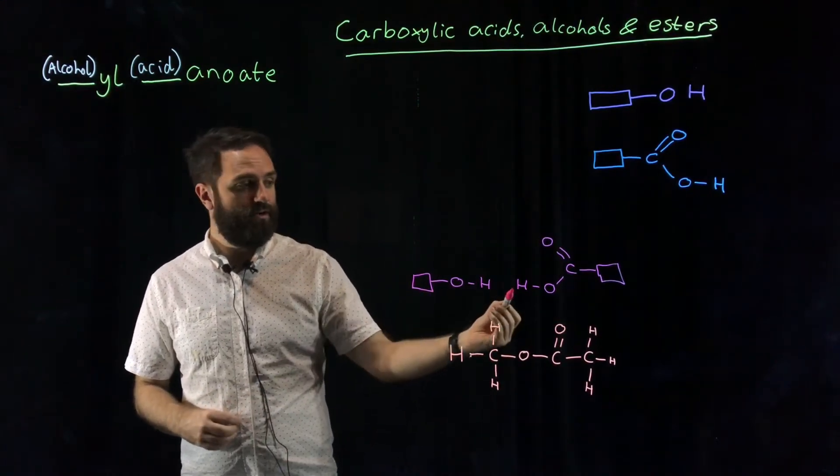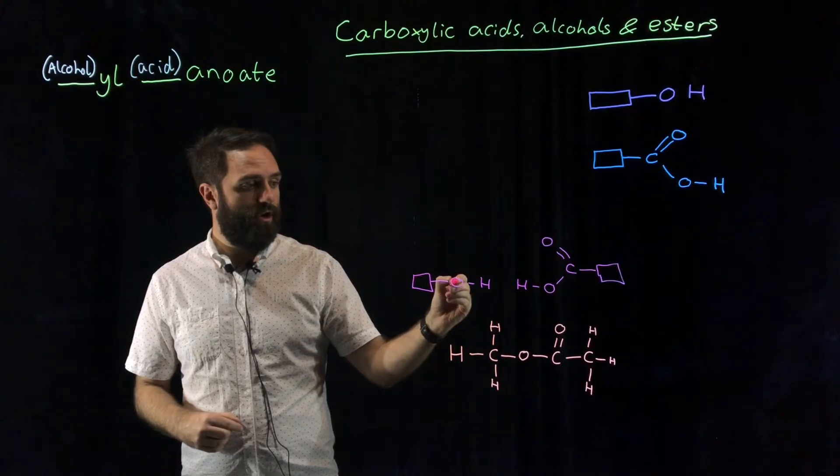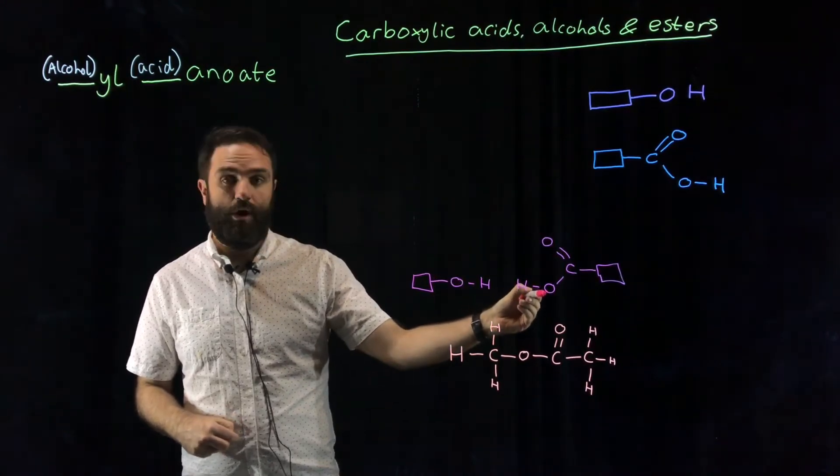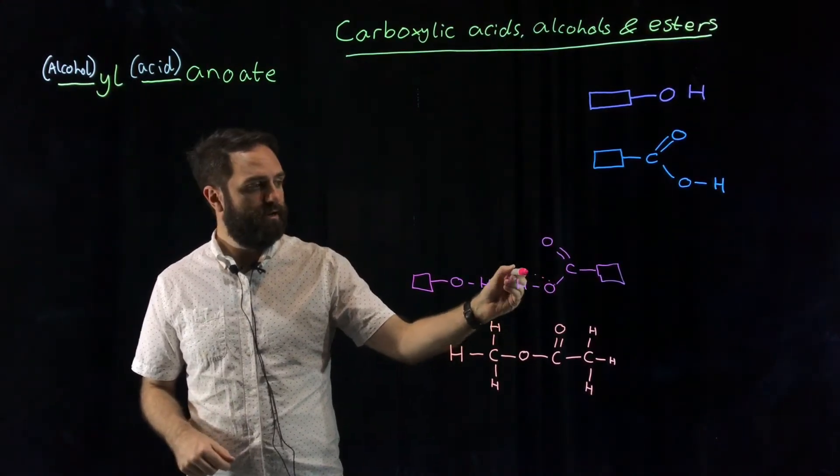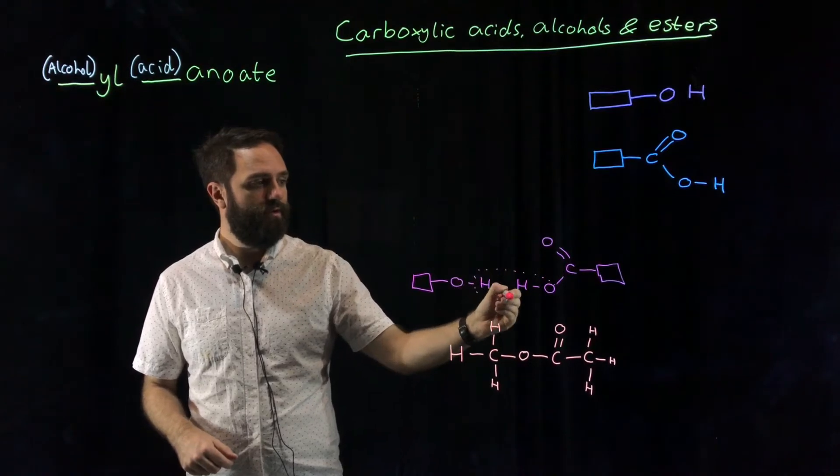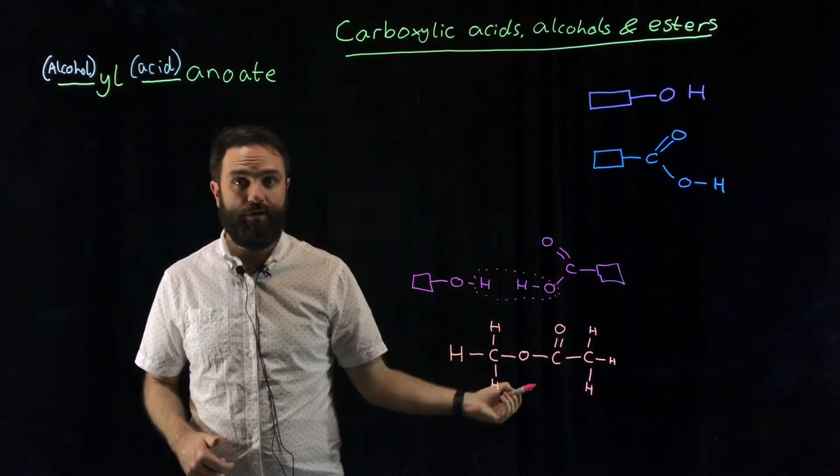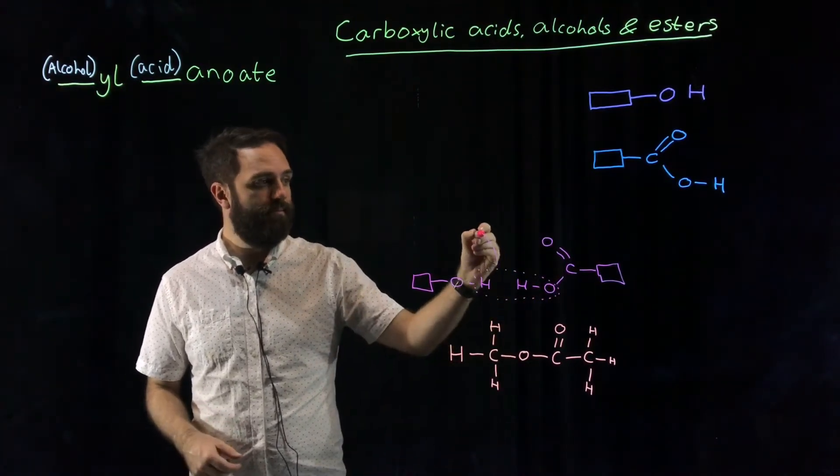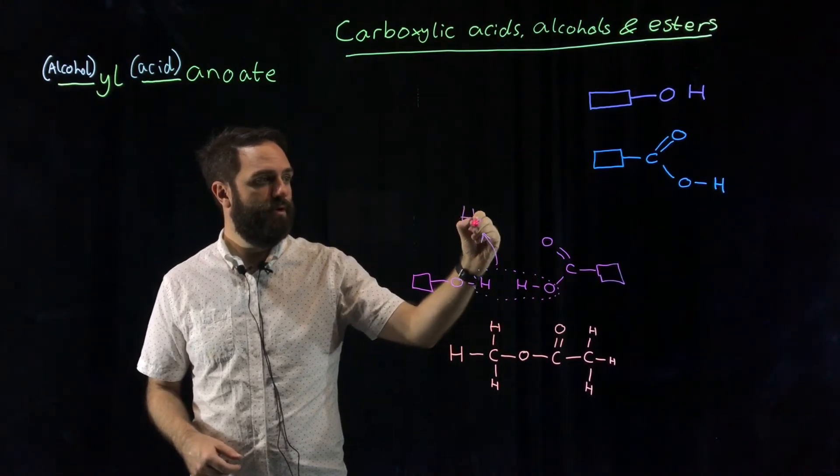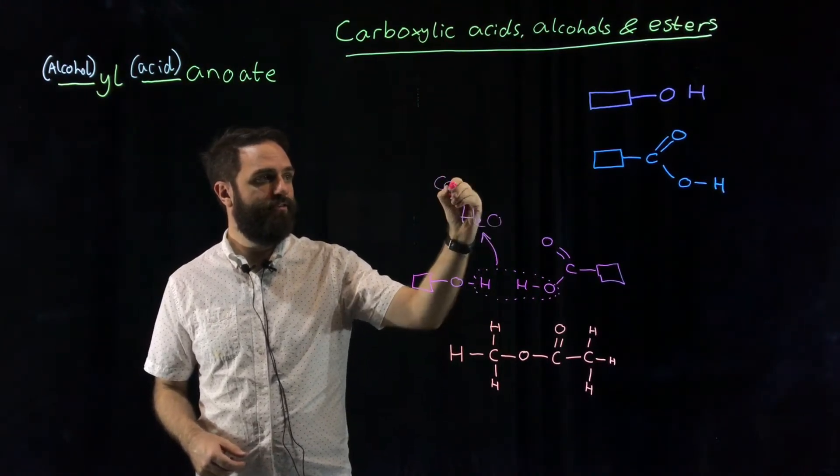If we take a look at the two functional groups we've got an O, an H, an H and an O. Now if we take away two of those H's and one of those O's, well we get H2O, water. This is a condensation reaction.